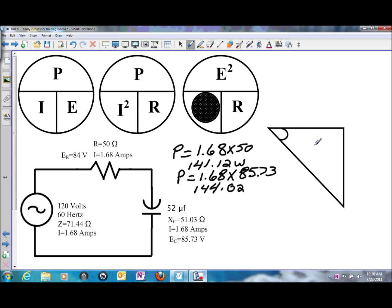And for building the power triangle, the adjacent side is your wattage or your true power. So that's going to be 141.12 watts. And the reactive side, or your reactive power or your VARs, we have 144.02 VARs.